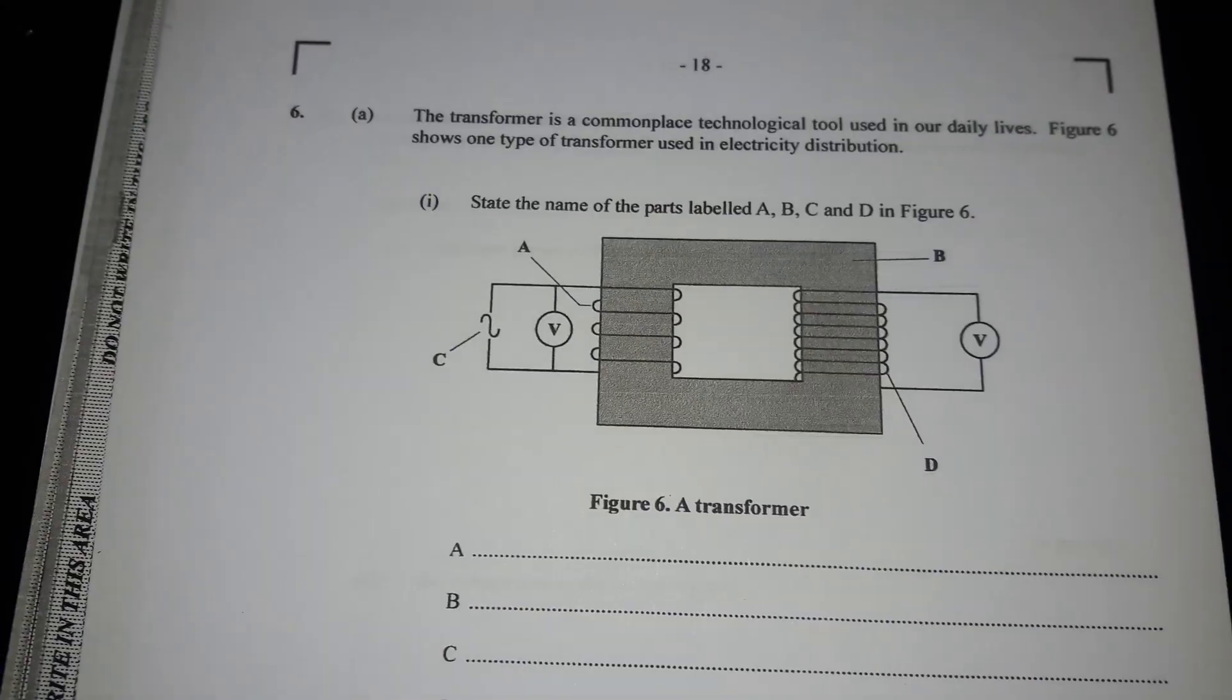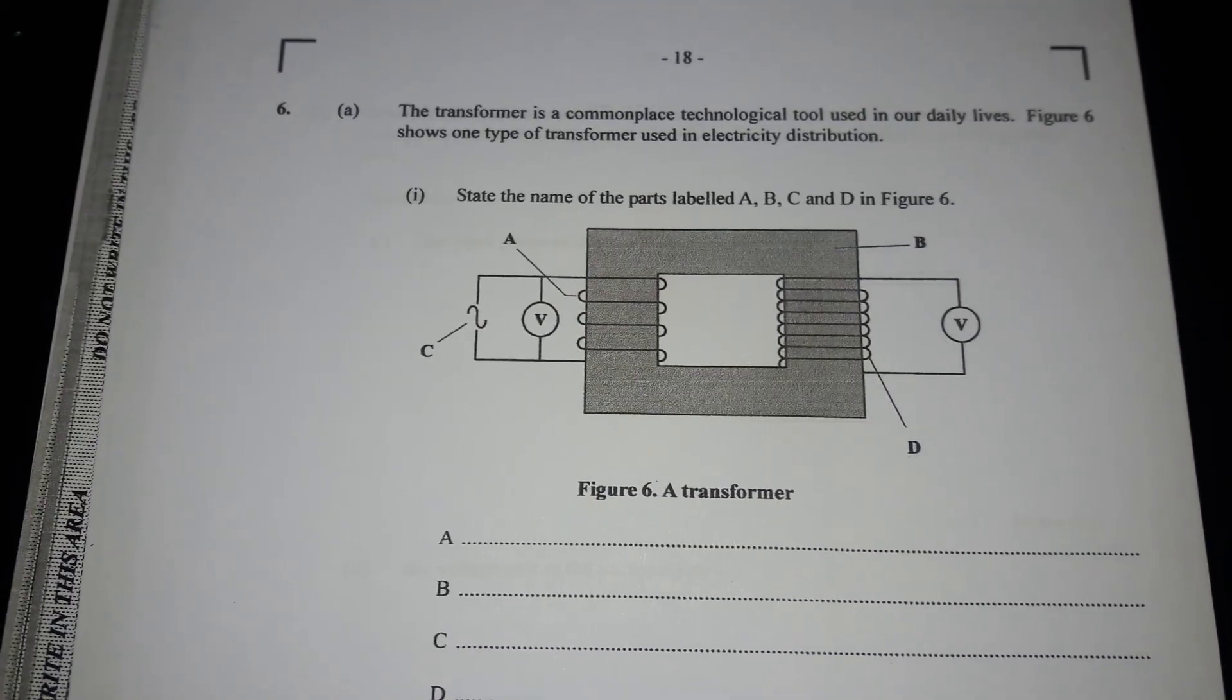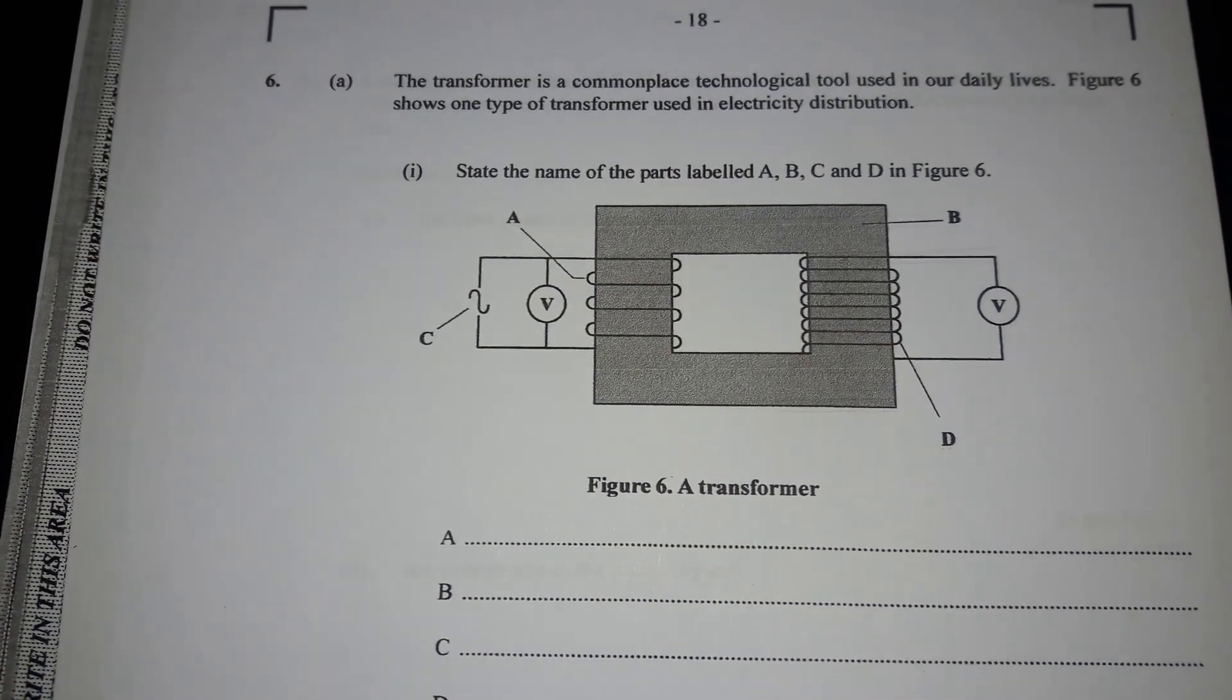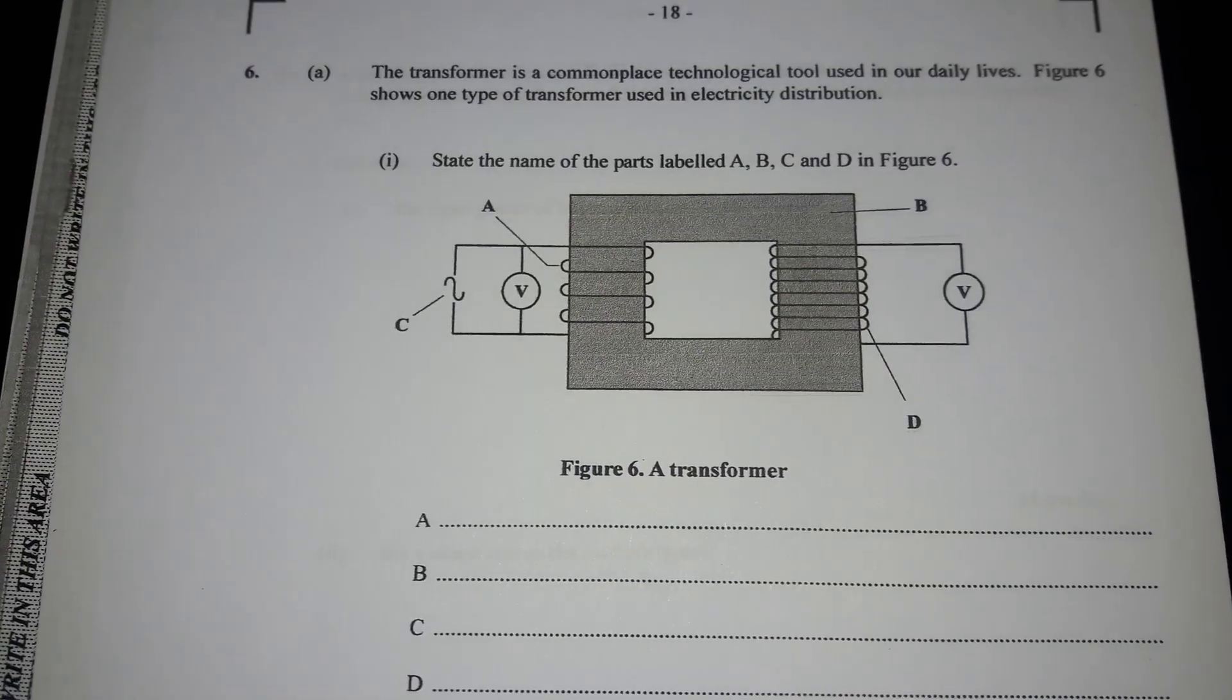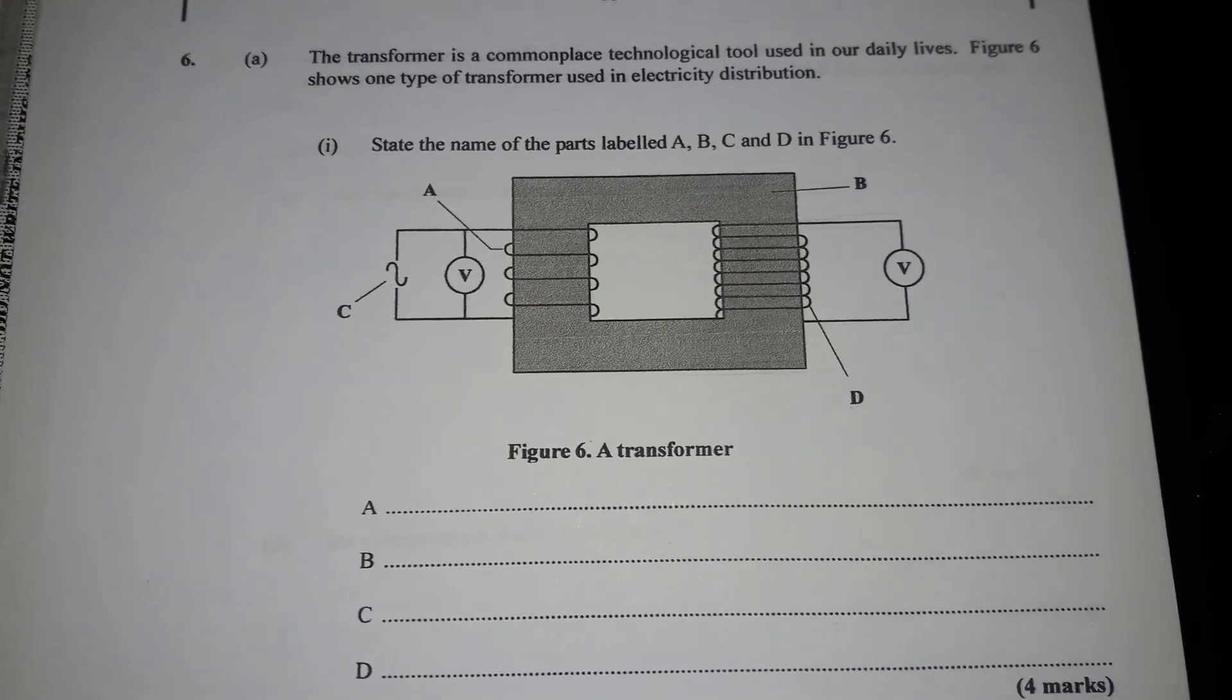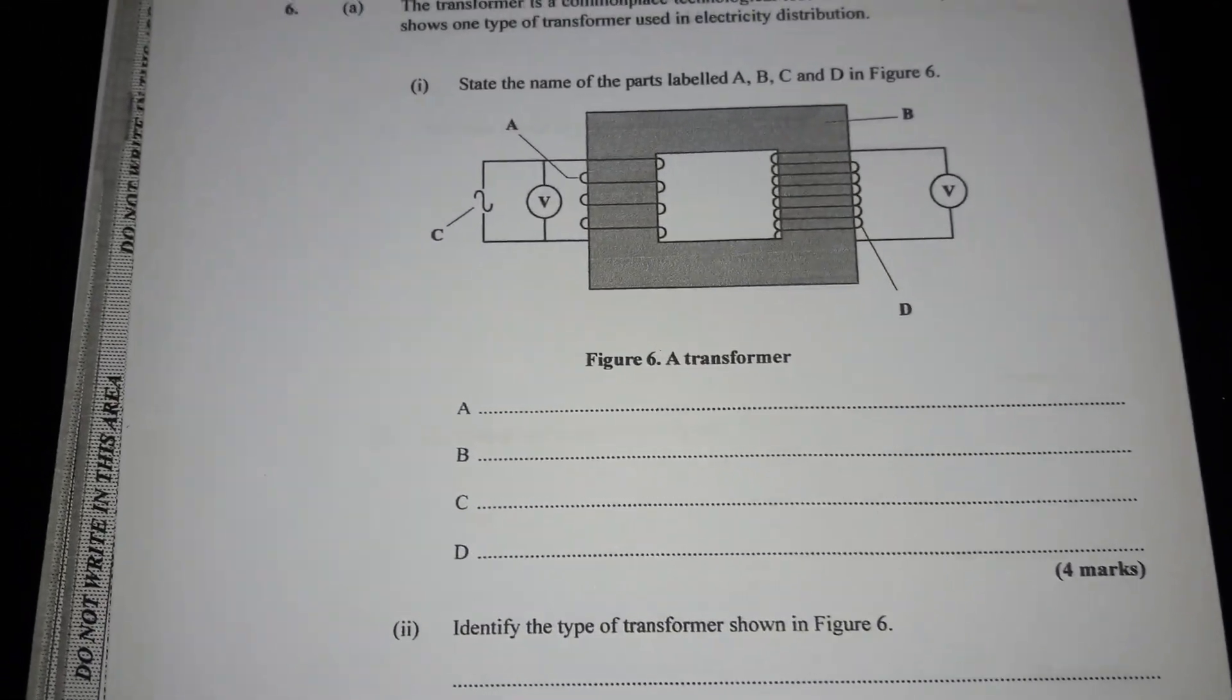Question one wasn't hard but it was tedious, so that will be done a little later. You had to remember to follow the rules with three significant figures. Let's stick with this question. A transformer is a commonplace technological tool used in our daily lives. Figure six shows one type of transformer used in electricity distribution. State the name of the parts labeled A, B, C and D.